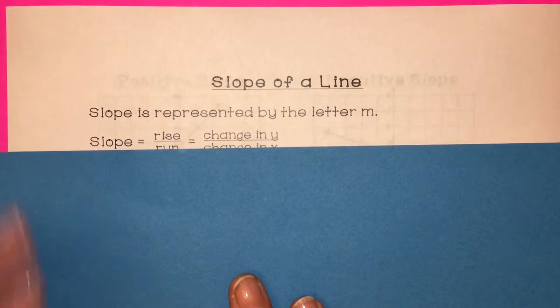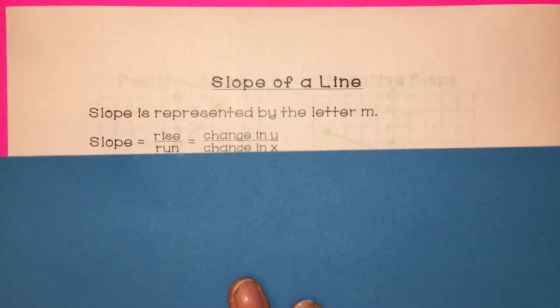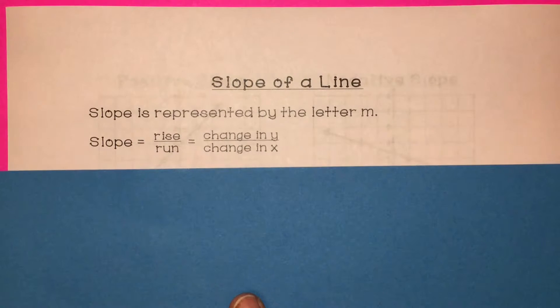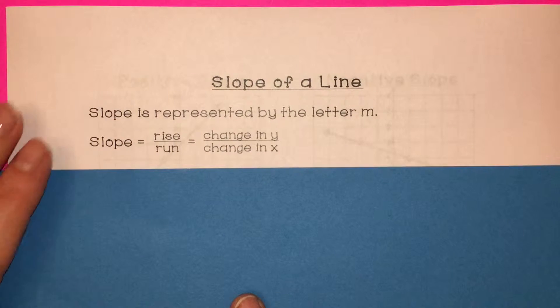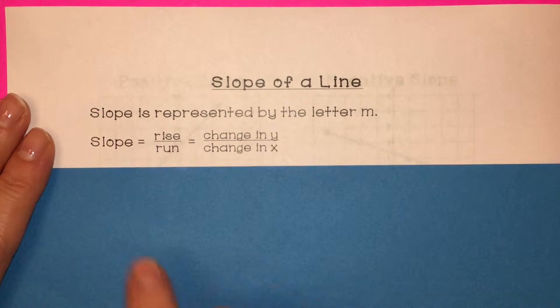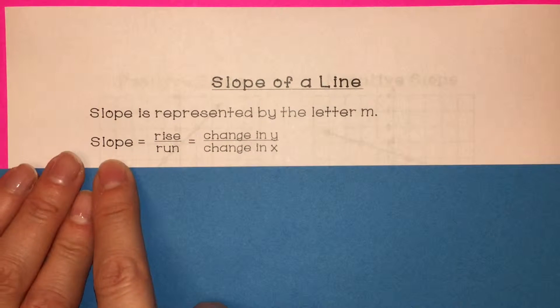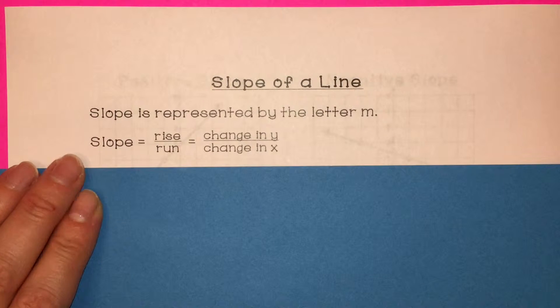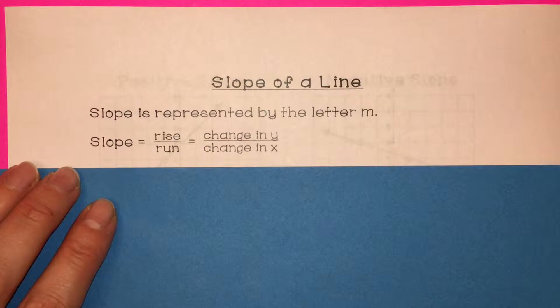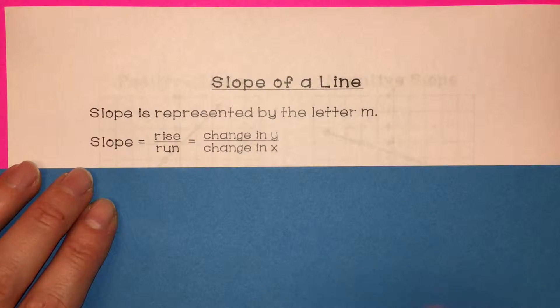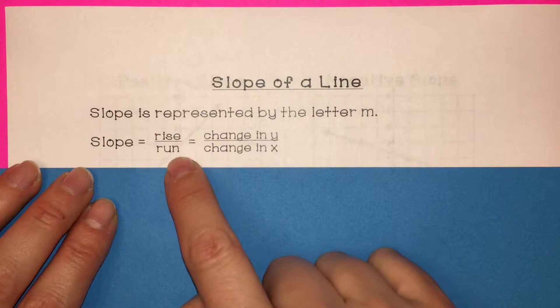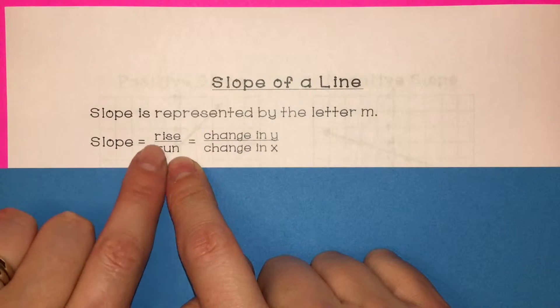Whenever you see M equals, they're asking you for what is the slope. When we have a graph or a line, we can find the slope by using rise over run.